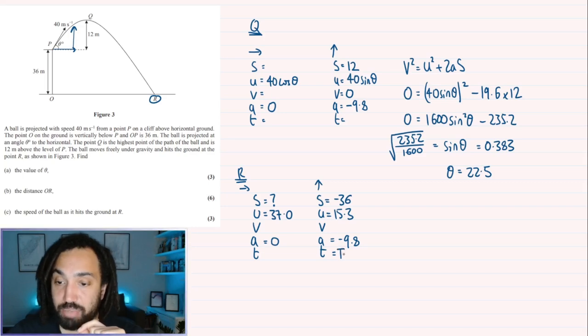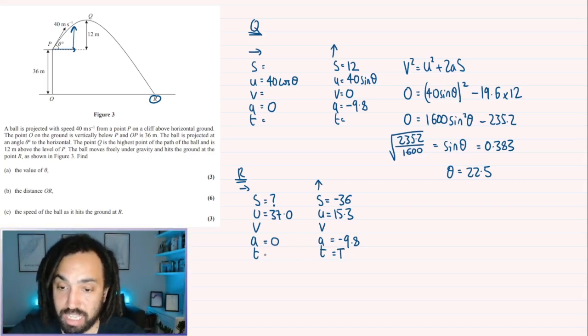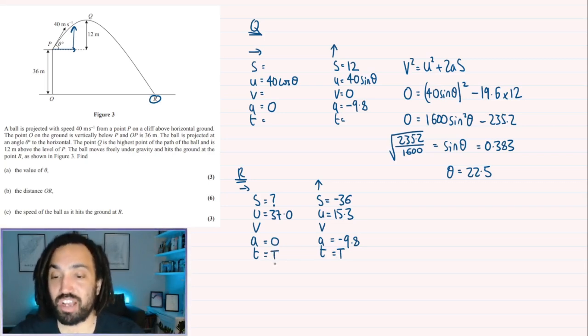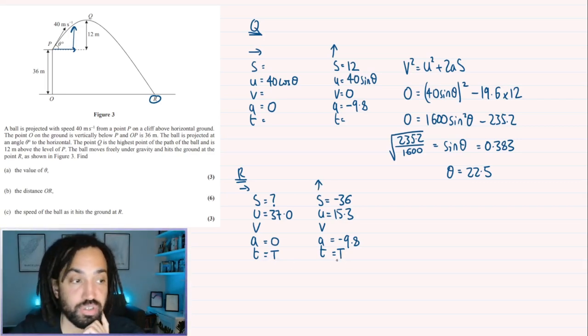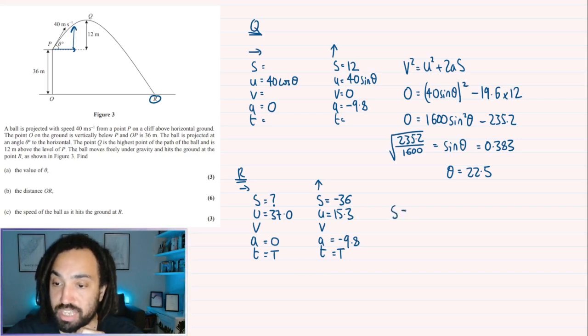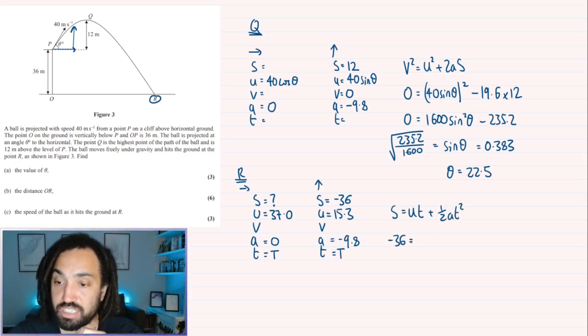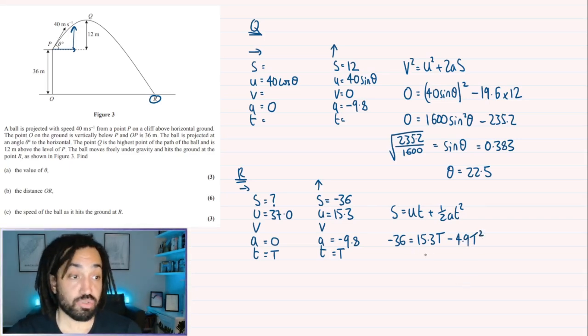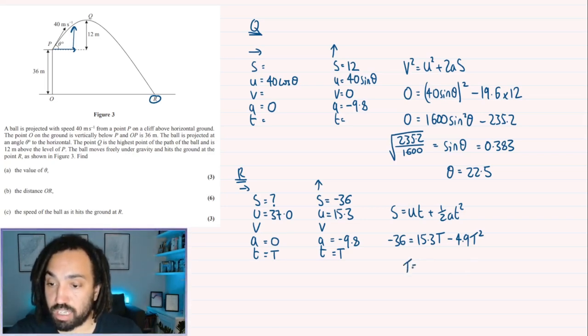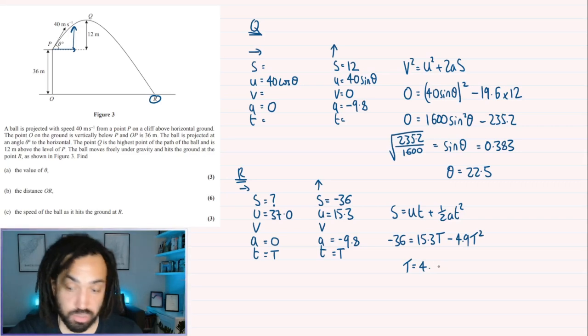OK. So what I can say is this is let's call this capital T because the beautiful thing about time at R is it's the same. The amount of time that has occurred in the vertical is exactly the same as in the horizontal. So we could transfer time over between these two suvats. So if I can find the time here, then I can transfer over to there. So what I would do is I would do S is equal to U T plus a half A T squared. Substitute in. I get minus 36 is equal to 15.3 capital T minus a half of 9.8 is minus 4.9 capital T squared. This is a quadratic. I can rearrange it and I can solve.